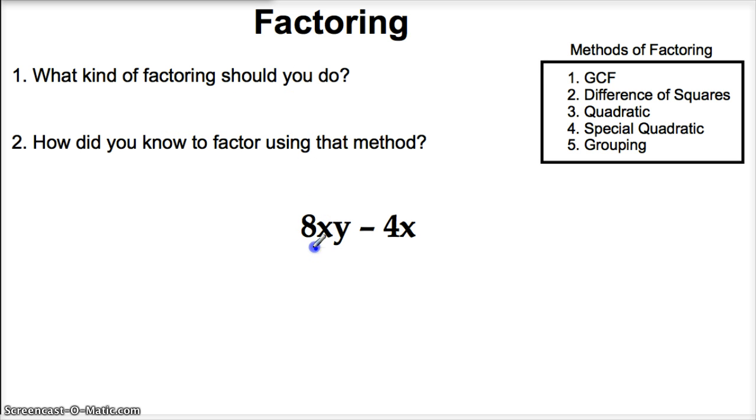Well, they both have a common factor of x. And that's not all. 8 has 4 as a factor. So they also have another common factor. So the kind of factoring I'm going to use here is GCF, and I know that because it is the king of all factoring. I'm going to give him a little king's hat. How did I know that? It's a common factor.